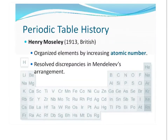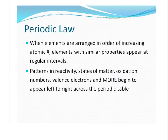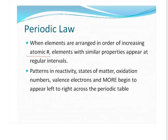Then along comes Mosley, and he reorganized the elements by atomic number, and that's how we have it today. By doing that, he resolved a lot of the problems that Mendeleev's arrangement had. So when we organize the elements in order of increasing atomic number, we start to see all these patterns in reactivity and valence electrons and all these things that help us to predict stuff about the elements.